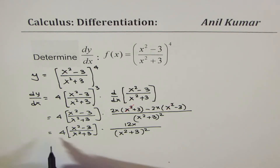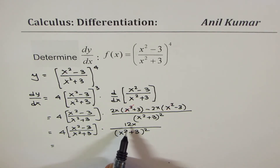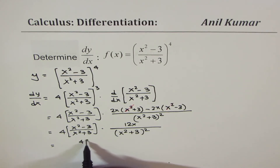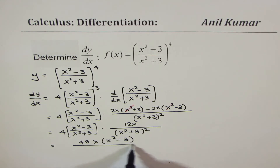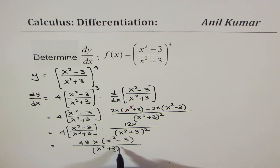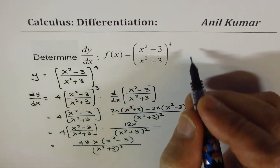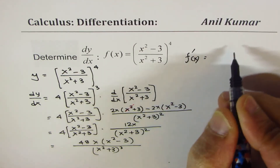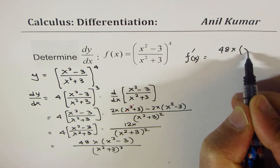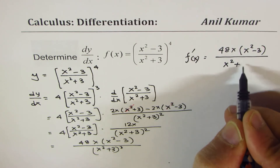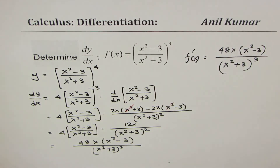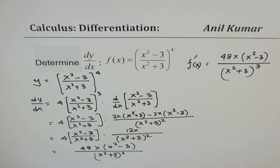And now we could write our answer, which is 4 times 12 is 48. So we have 48x, and this term which is x squared minus 3, divided by x squared plus 3 to the power of 2 plus 1, which is 3. So the derivative of this function equals 48x times x squared minus 3, divided by x squared plus 3 whole cube.